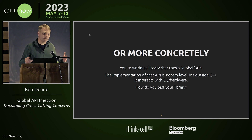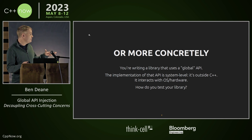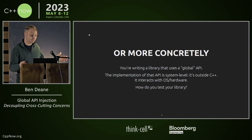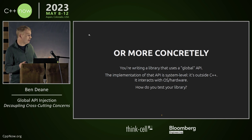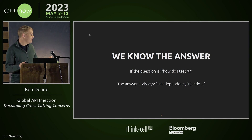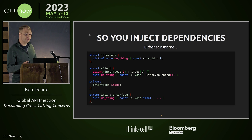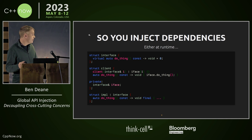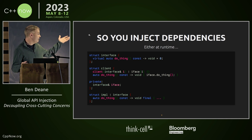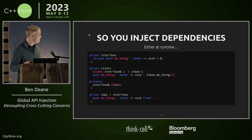Alternatively, you're writing a library that interacts with the OS or hardware — how do you test it? Well, the answer is always the same: use dependency injection. You can do this several ways. You can do it at runtime with classical runtime polymorphism.